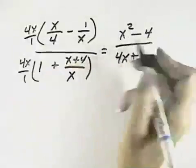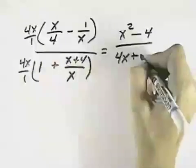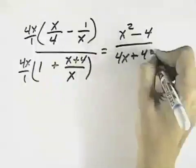In the denominator, nothing cancels in the first term, so we have 4x. And then the x cancels with the second term, leaving 4 times the x plus 4.